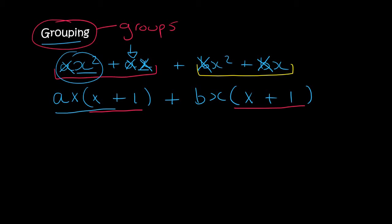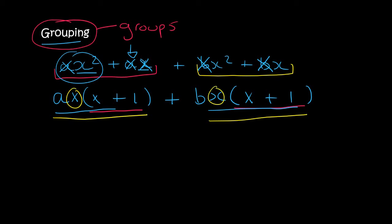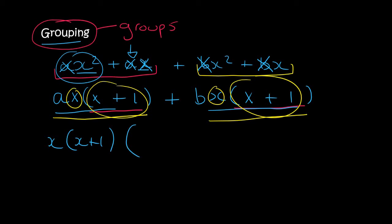Now you know how to factorize these types of things. We've got two terms. Both of them have an x, and both of them have an x plus one, so we can take that out as a common factor. We say x(x plus one), then open a bracket. In the first term we still have an a, in the second term we still have a b, so we say a plus b. And there's your final answer.